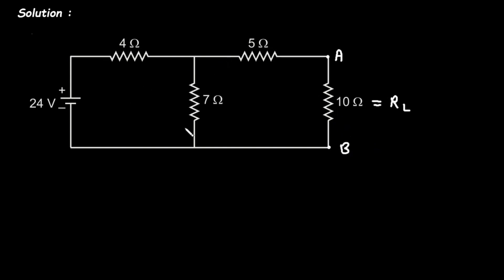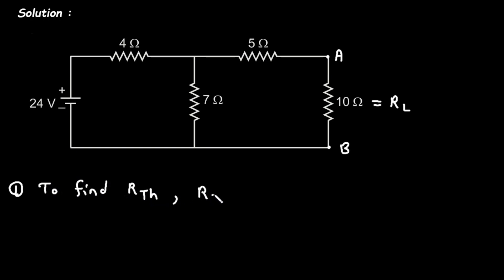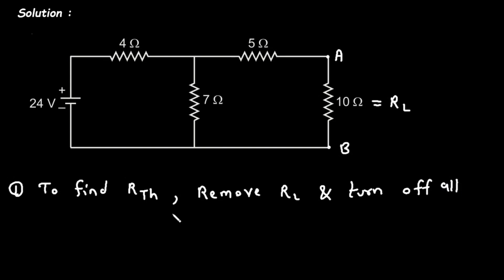To find the current through this 10 ohm resistor by using Thevenin's theorem, we will apply step number one: find RTH. To find RTH, we will remove RL and turn off all sources.